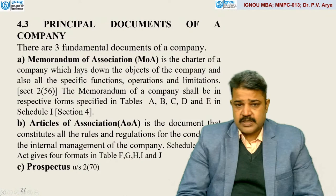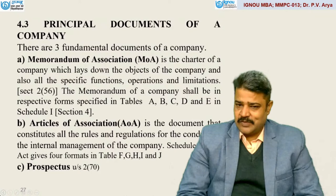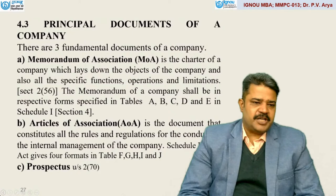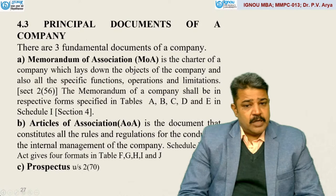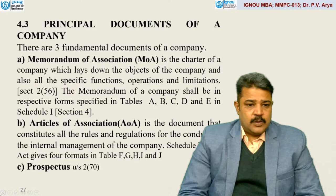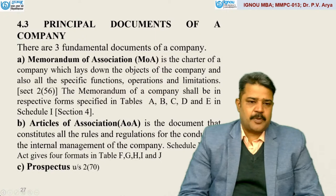As far as Memorandum of Association is concerned, it is a charter of a company which lays down the objects of the company, and also all the specific functions, operations, and limitations. Under Section 2, Subsection 56, the memorandum of a company shall be in respective forms specified in Schedule 1, or in the form of Tables A, B, C, D, E. These tables are of a specific purpose type of memorandum one needs to form, and accordingly this is to be selected.